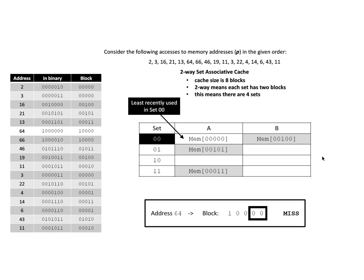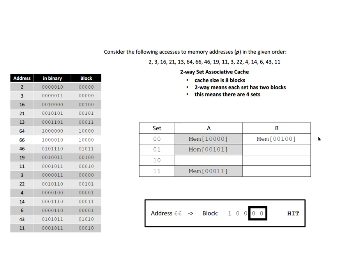Now we reach a block ID of 1000, so we look in set 00. Neither block in that set is the one containing address 64, so we must evict something. Using the least recently used (LRU) protocol, the block in column A of set 00 was least recently used, so we evict it and replace it with the block containing address 64. The next access is address 66, which is in the same block we just loaded — it's in the cache under set 00, so that's a hit.